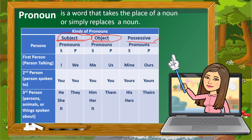In identifying what pronoun to use, it is very important to know the person. First person is the person talking. Second person is the person spoken to. Third person refers to the persons, animals, or things spoken about. S and P stand for singular and plural.